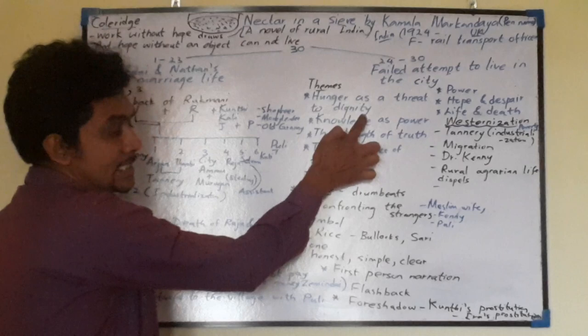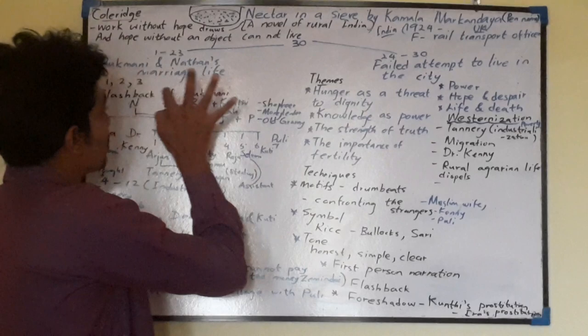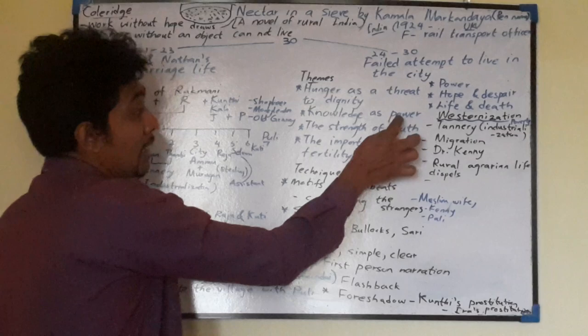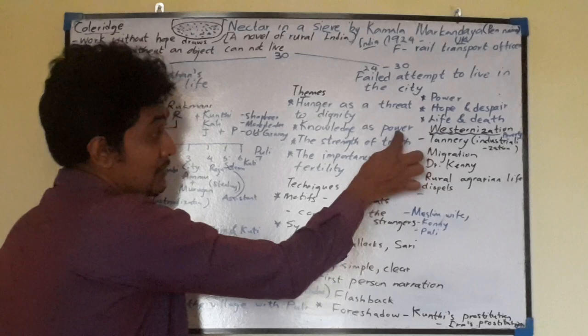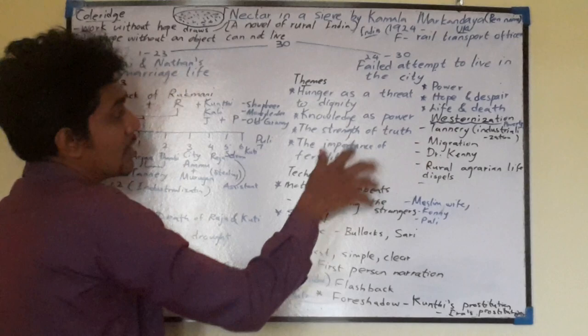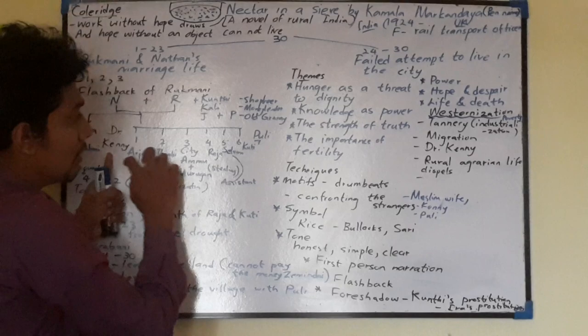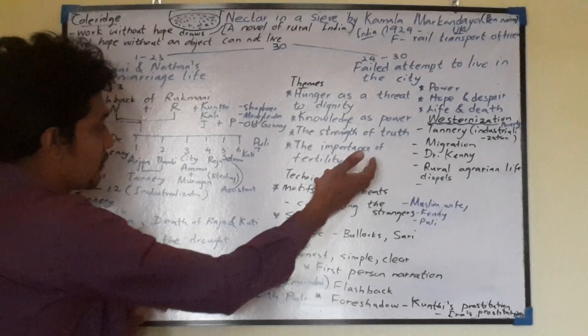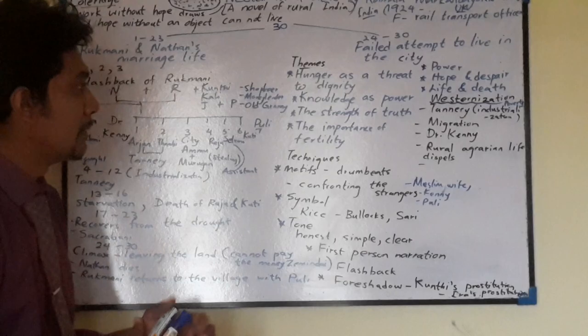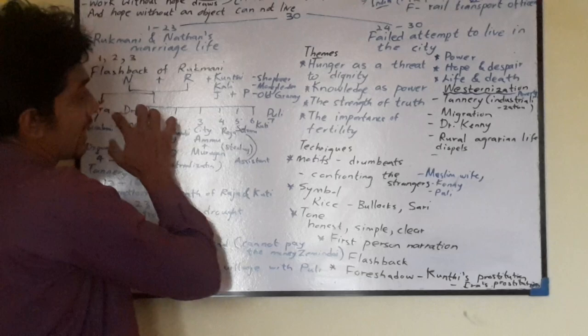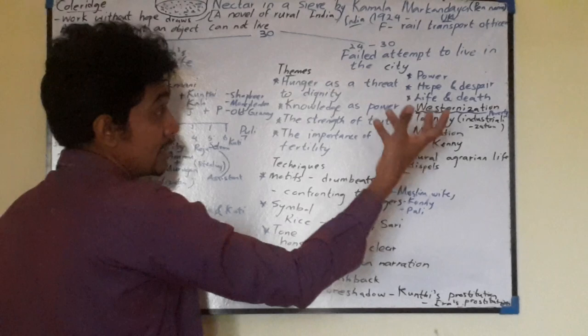Some of the major themes are: hunger as a threat to dignity, knowledge as power, and the strength of truth — truth presented from Rukmani's perspective, as she is the more truthful character. Power comes from invisible forces, from deities and supernatural powers, as well as physical power to work in nature. The importance of fertility is shown when Dr. Kenny provides medicine to help Ira and Rukmani deliver children. Hope and despair are also central — hope comes from the character of Kenny, while despair always comes from starvation and drought.